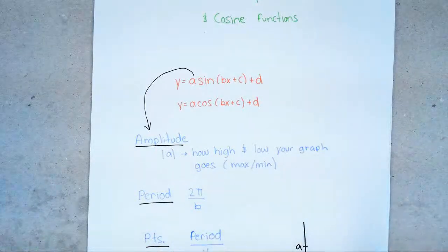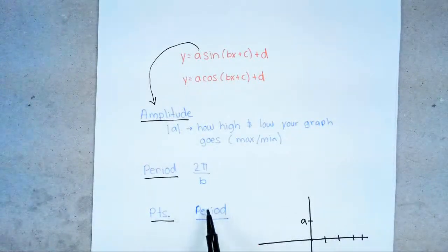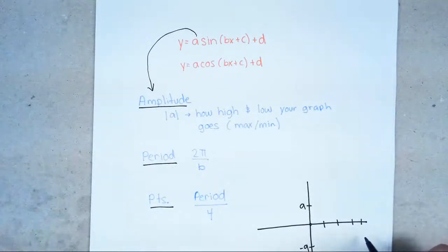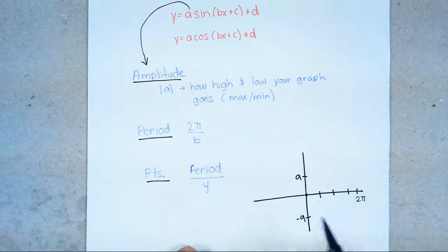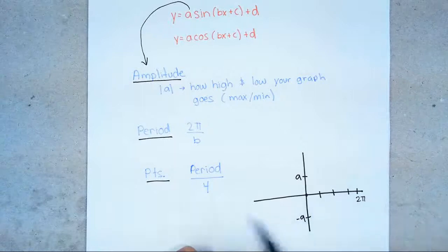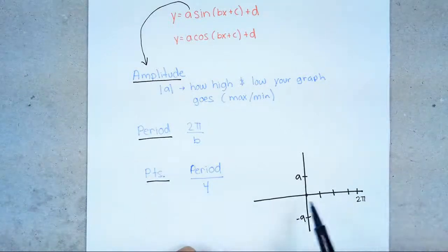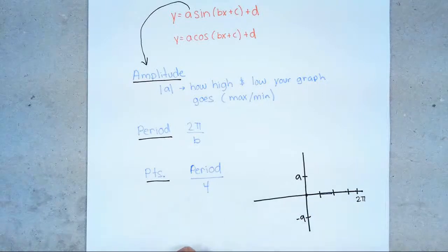After you figure out your amplitude and your period, you're going to work on your points — period over 4. Any sine and cosine function goes up to 2π, and the first period, the first cycle — remember a period is also called a cycle — has four spaces. Because they have four equally-spaced spaces, that's why we divide by 4, which will make sense when we actually do an example.